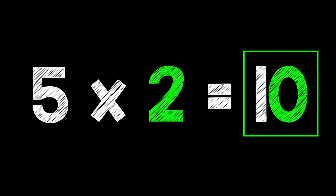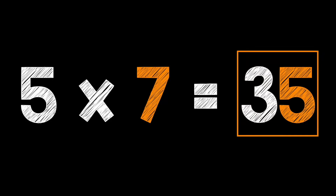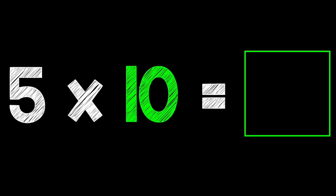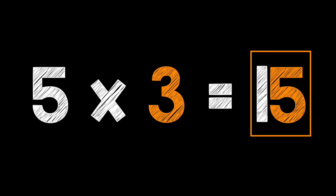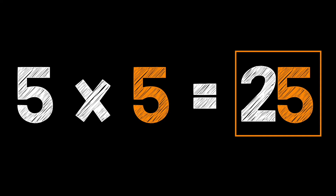5 times 2 is 10. 5 times 7 is 35. 5 times 1 is 5. 5 times 6 is 30. 5 times 10 is 50. 5 times 12 is 60. 5 times 3 is 15. 5 times 5 is 25.